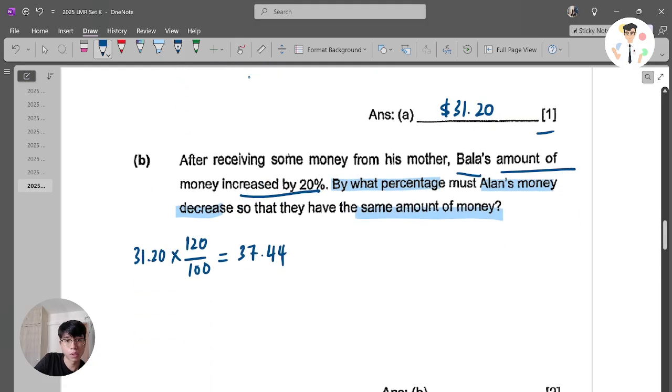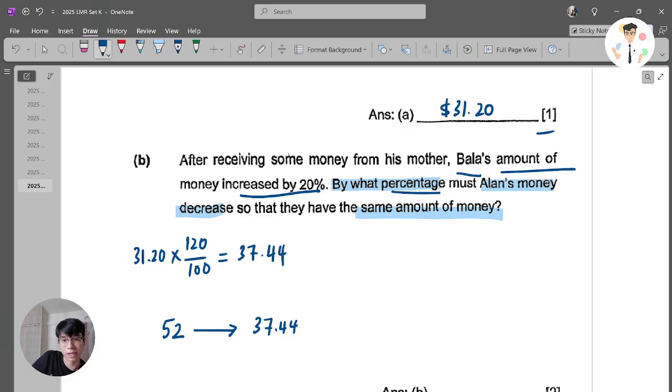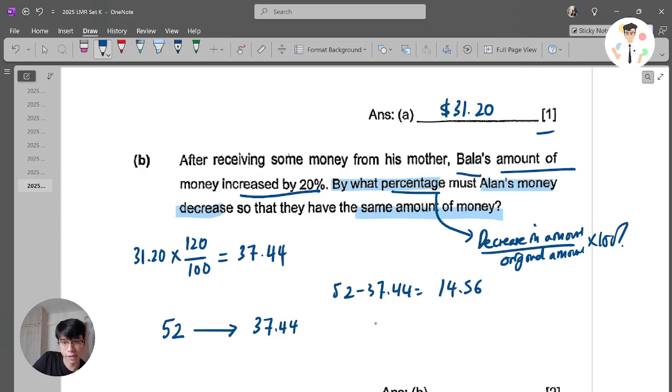Now, the question says, this is the interesting part: By what percentage must Alien's money decrease so that they have the same amount of money? Now, Alien have $52. They want you to decrease to $37.44. So I need to find the amount of decrease then I need to find out the percentage. And this is basically the percentage decrease. The formula is decrease in amount divided by original amount times 100%.